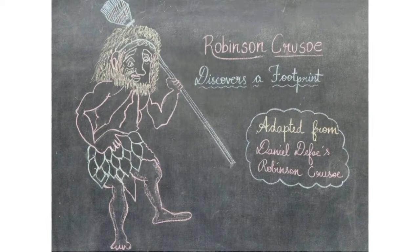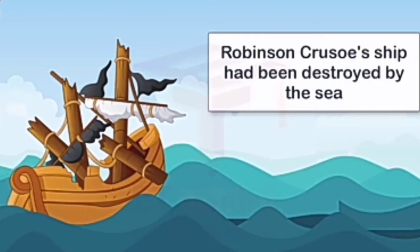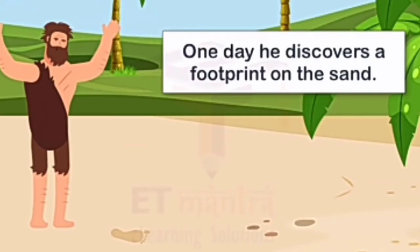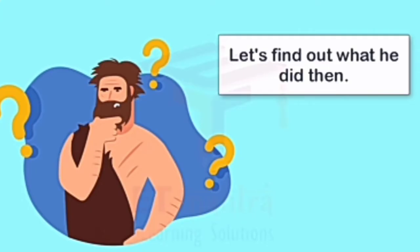One day, he saw a footprint on the sand. He was sure that it was the footprint of a man. Robinson Crusoe's ship had been destroyed by the sea. He had been alone for many years and longed for company. One day, he discovers a footprint on the sand — let's find out what he did then.